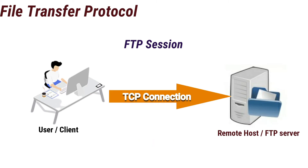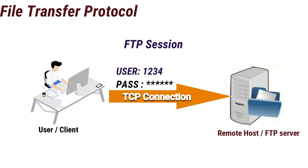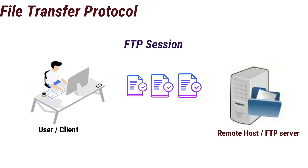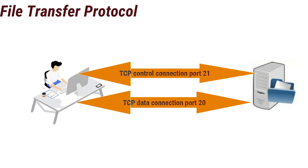TCP connection is connection-oriented, reliable data transfer, and performs congestion control. The user then provides the user identification and password, which are sent over the TCP connection as part of the FTP commands. Once the server has authorized the user, the user copies one or more files stored in the local file system into the remote file system, or vice versa.